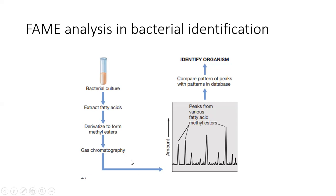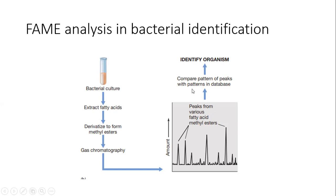The fatty acid methyl ester forms are volatile in nature and are a prerequisite for their analysis by gas chromatography. The gas chromatographic analysis can tell you what the different types of fatty acid methyl esters are that are present in your sample in the form of different peaks. You can also determine the amount of that particular fatty acid methyl ester present in the given sample. Once we have information about the different types of fatty acids and their amounts, we compare the pattern of the peaks with the pattern in the database, and this will help in identification of the unknown microorganisms.